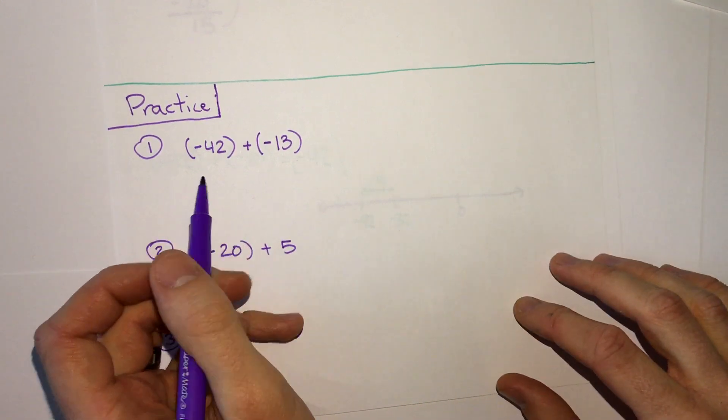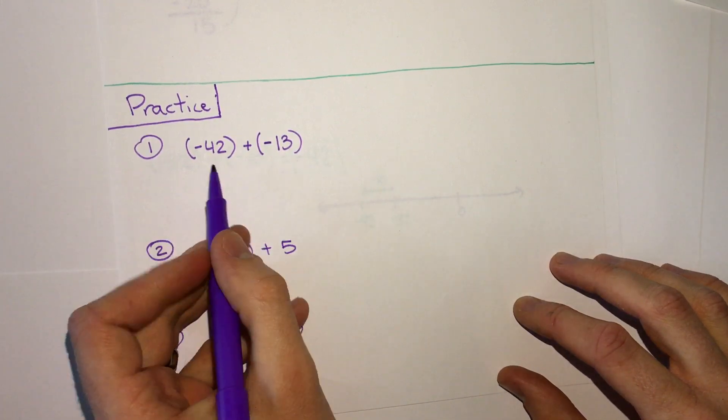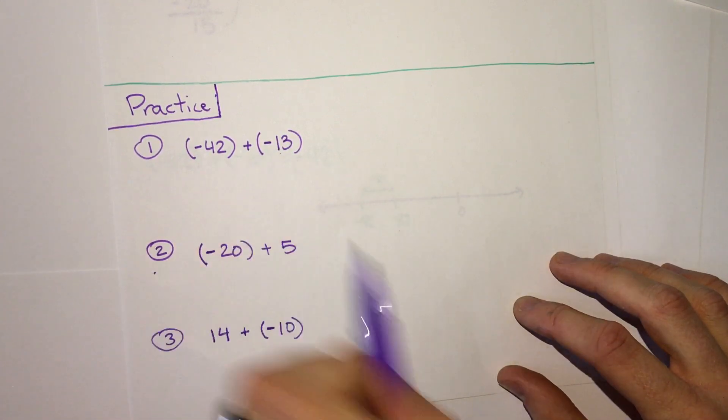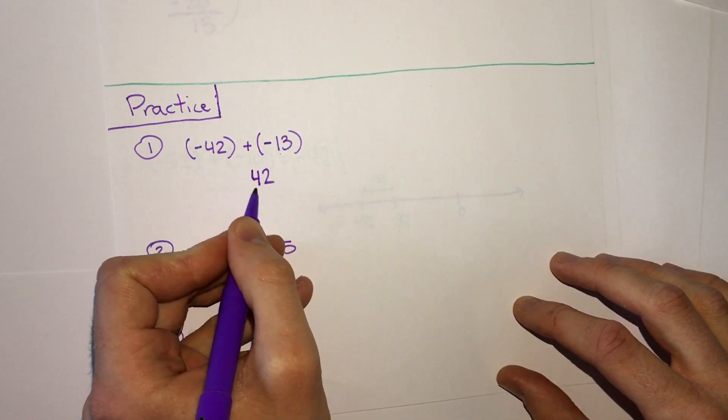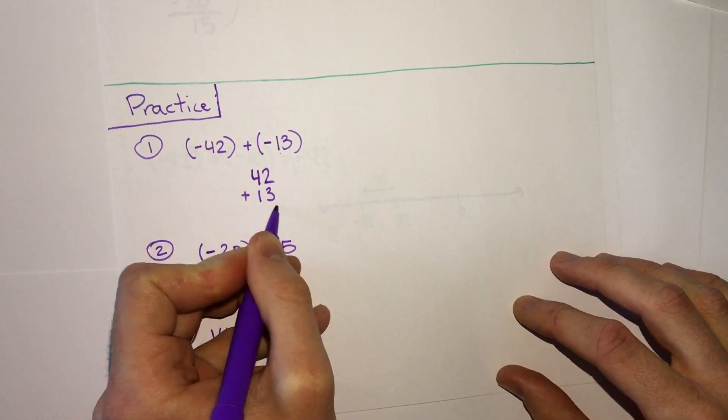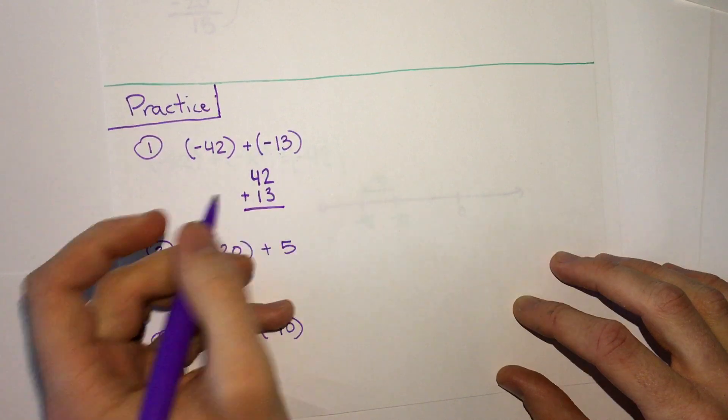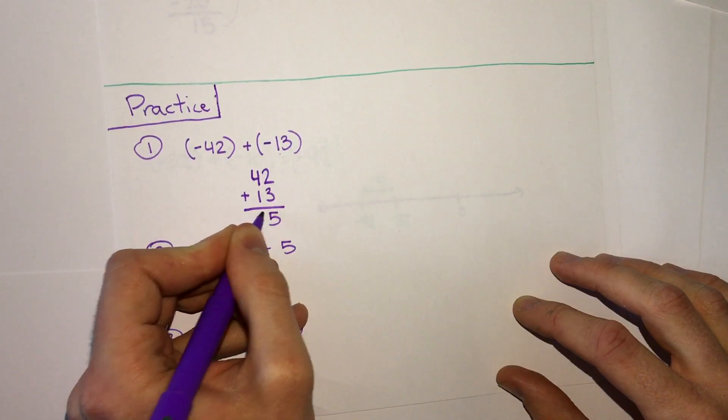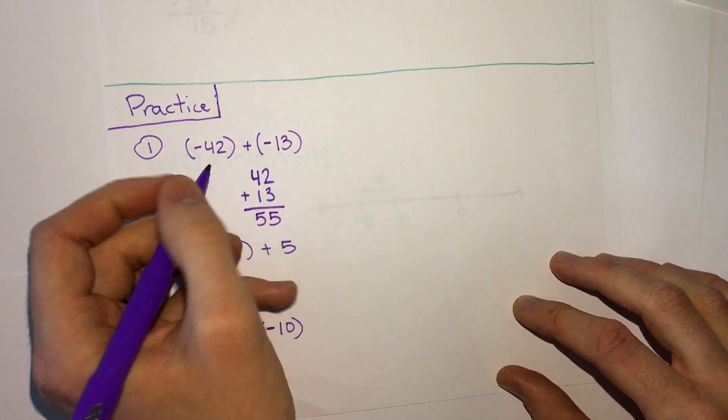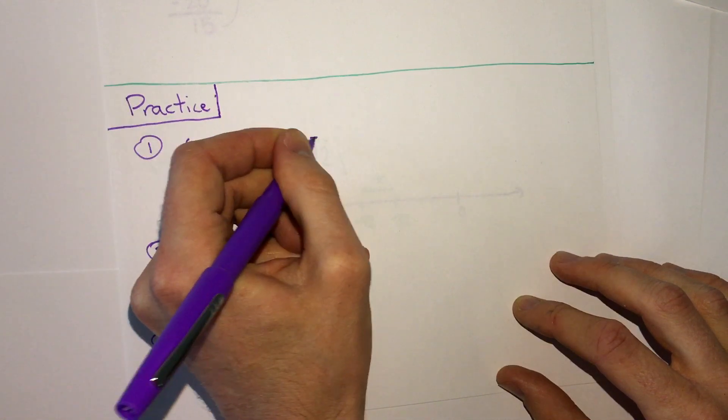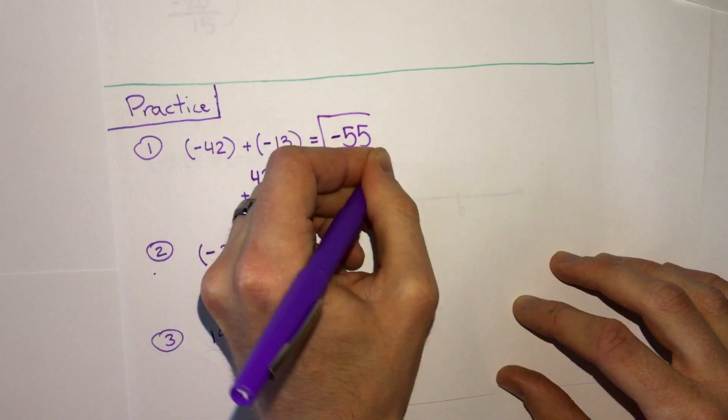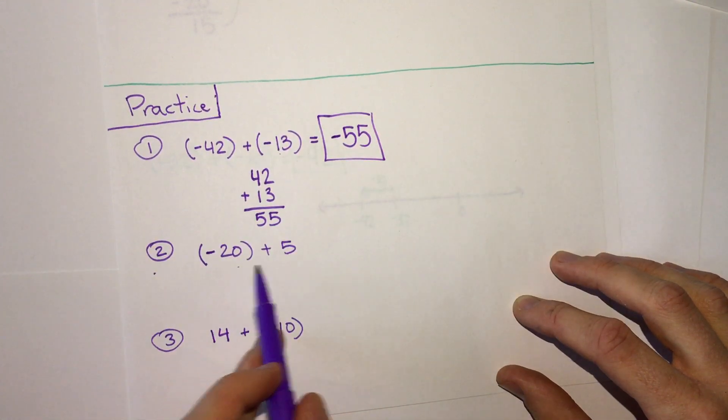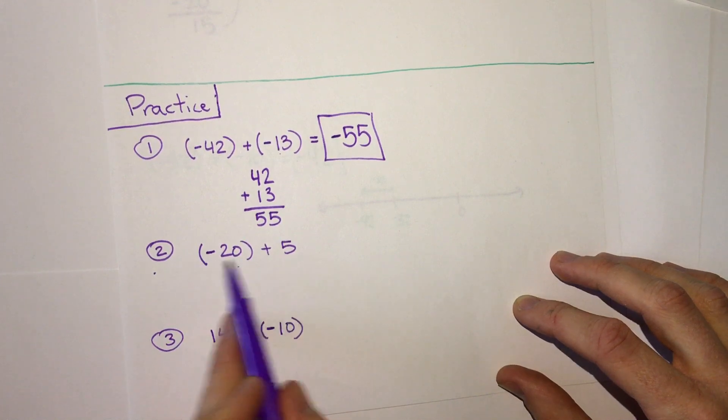Okay, so hopefully you've tried those. If you looked at this first one, you saw that there were two negatives. That means we can simply add those numbers up. Negative 42 plus negative 13, we get 55. Because it's negative plus a negative, our answer is negative 55.